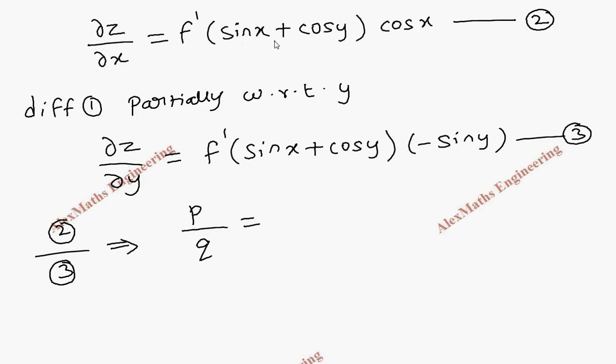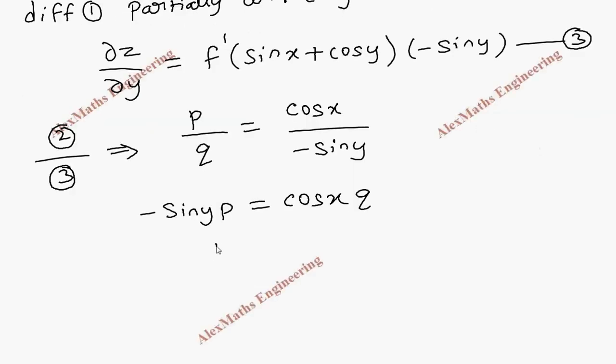f'(sin x + cos y) gets cancelled, and we have cos x / (-sin y). By cross multiplying, we get -sin y · p = cos x · q. By taking this term to the other side,